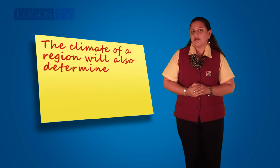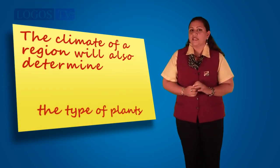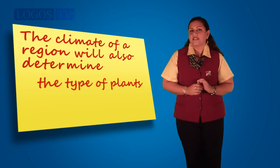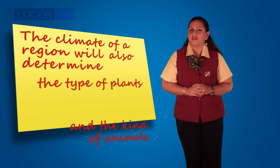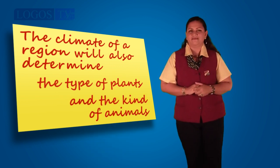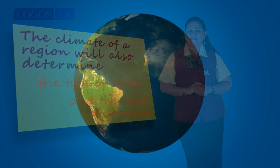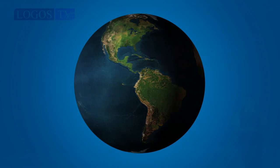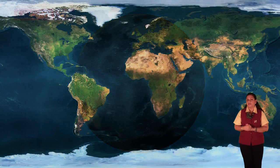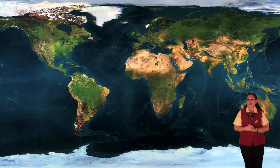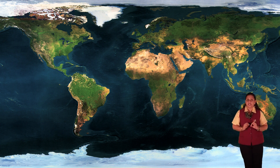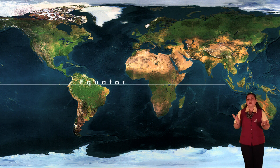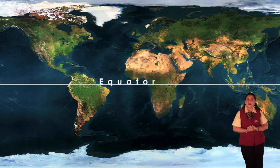The climate of a region will also determine the type of plants that we grow there and the kind of animals that live there too. We can divide our planet Earth into large climatic zones depending on the type of climate in each one. The distribution of these zones depends on their distance from the equator — this is the imaginary line called the equator.